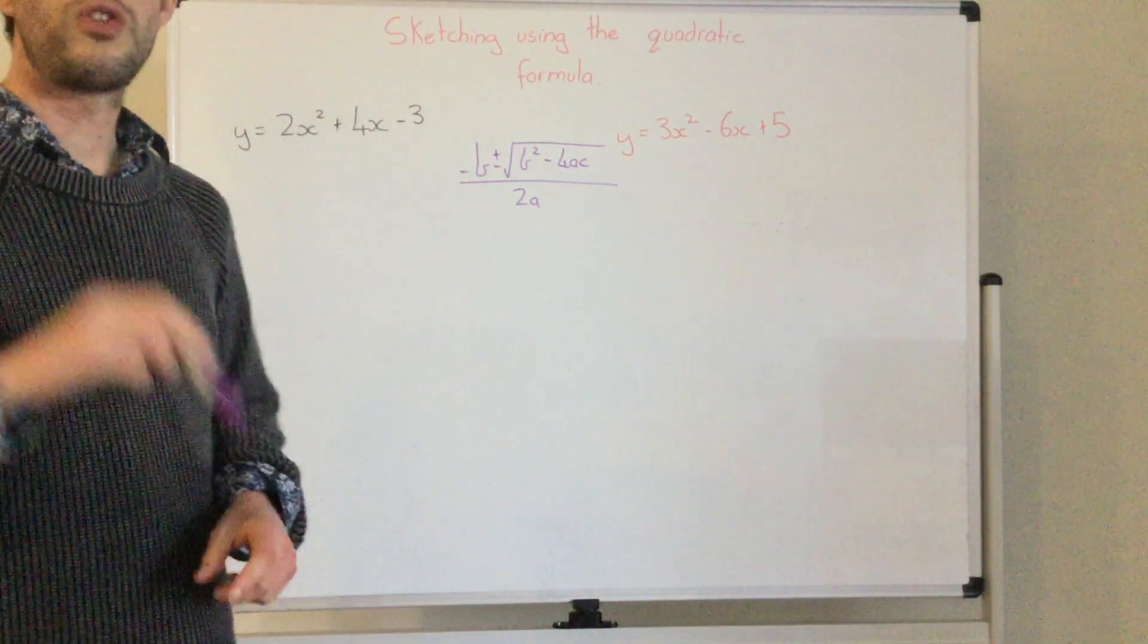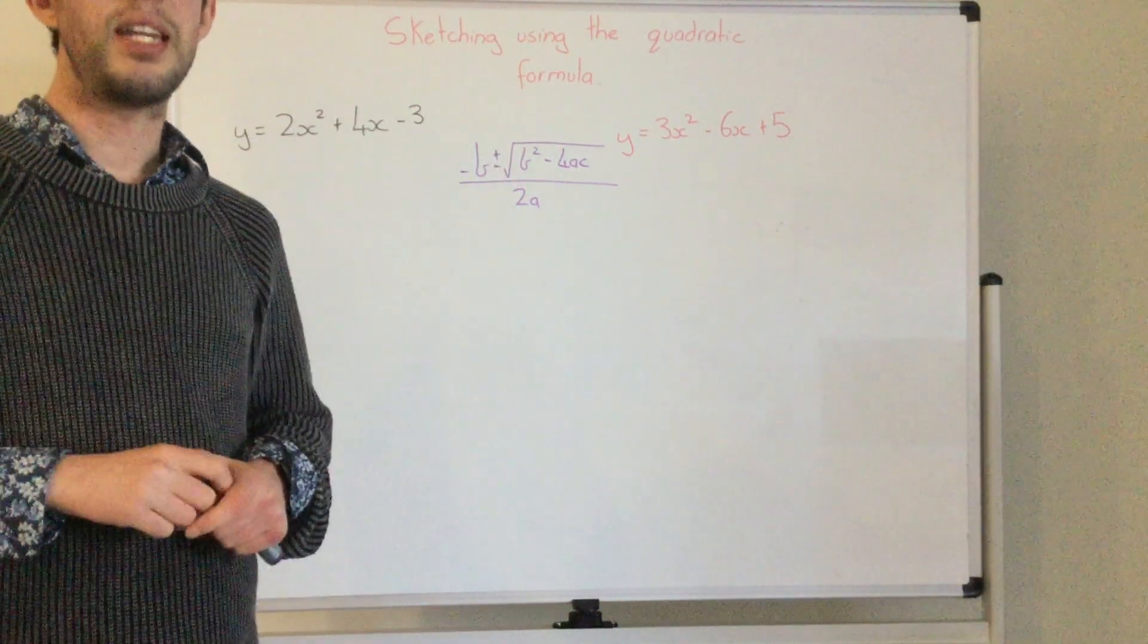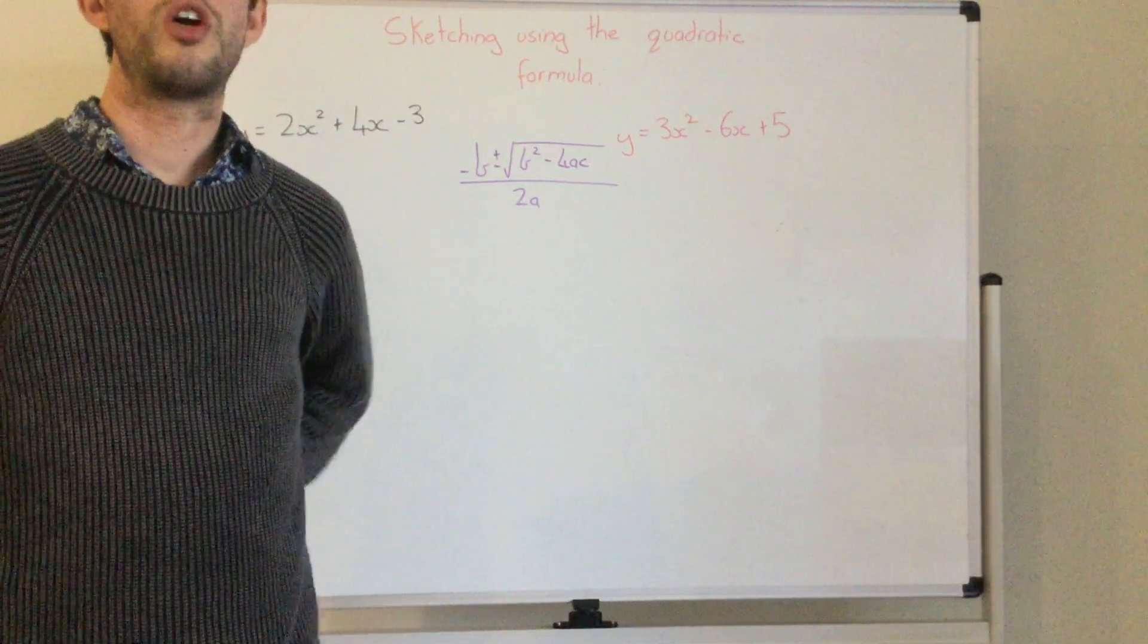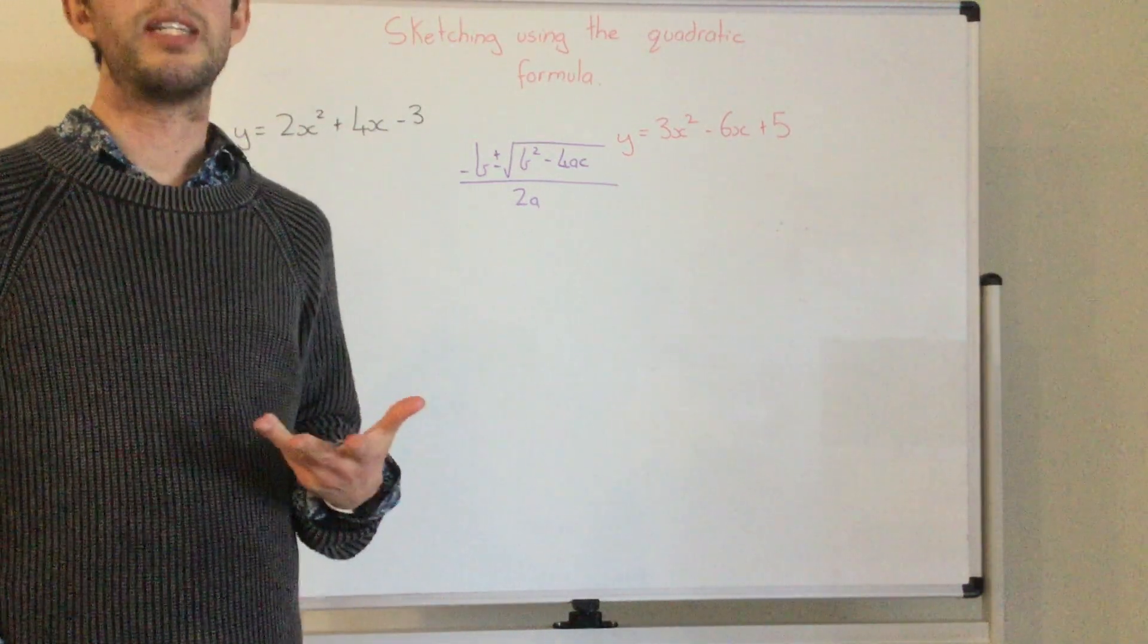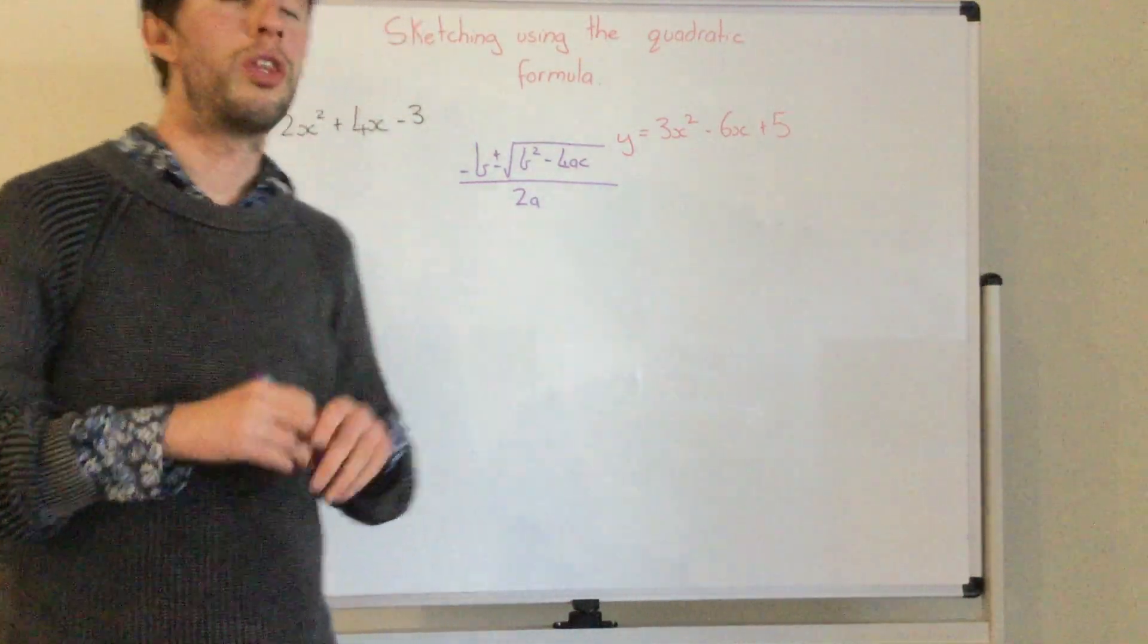Now just remember if our square root is a negative that means there is no real number and if we're thinking that there's no real number it just means that there is no x values. So our turning point is not on the x-axis.